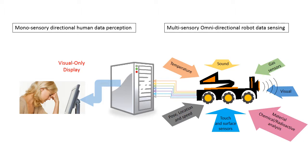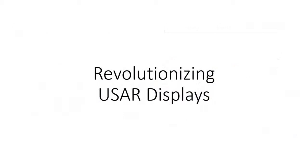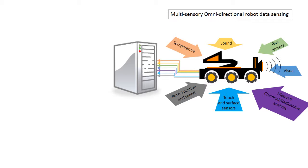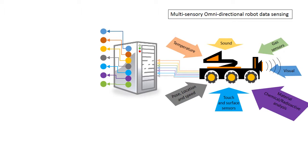What other options are available, apart from using a display that leverages only monosensory and directional visual perception? The research presented here takes an approach successfully applied in other areas of computer science but not yet fully explored in Human-Robot Interaction, specifically in USAR. The idea is to keep the multisensory and omnidirectional sensing side of the robot as is, but on the user side, recreate a similar multisensory and omnidirectional situation for human perception. We should not reproduce the remote situation to the operator with complete fidelity — otherwise, using the robot interface would lead to the same hazardous situation the operator was trying to avoid.